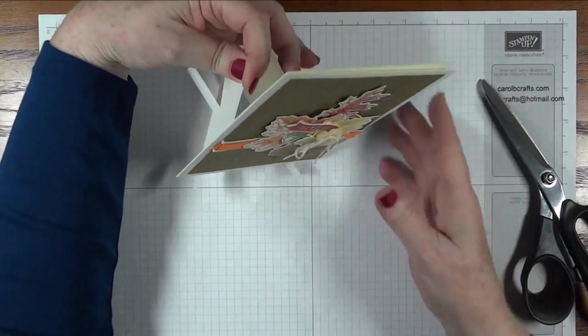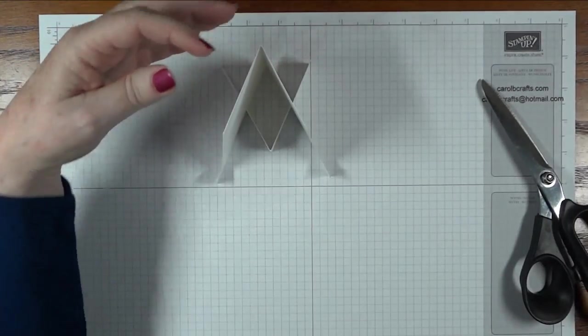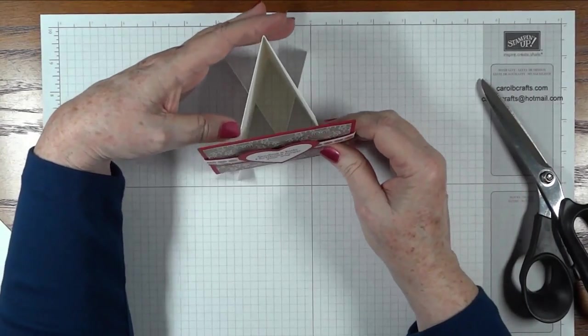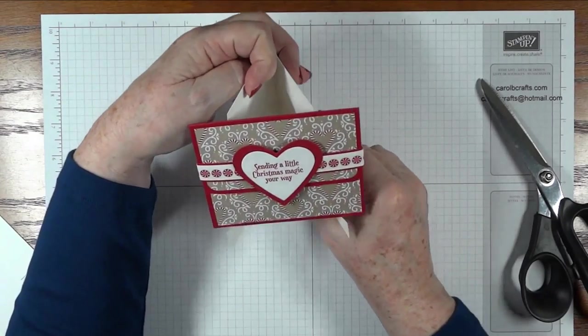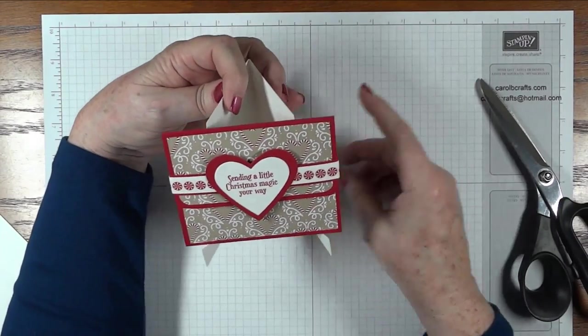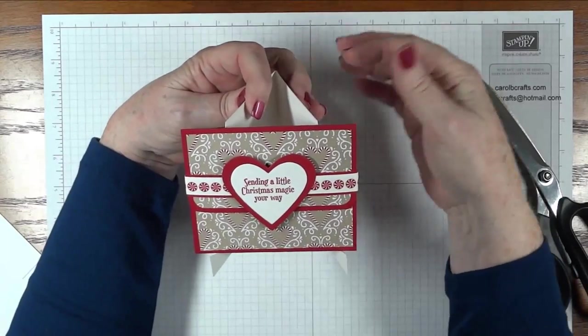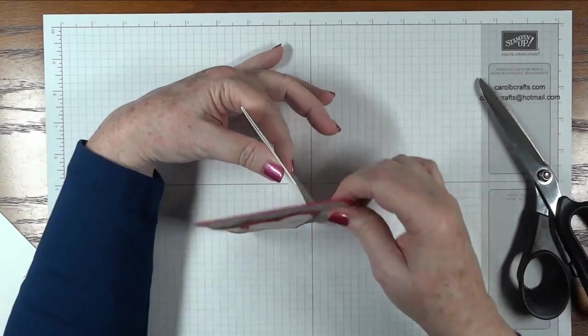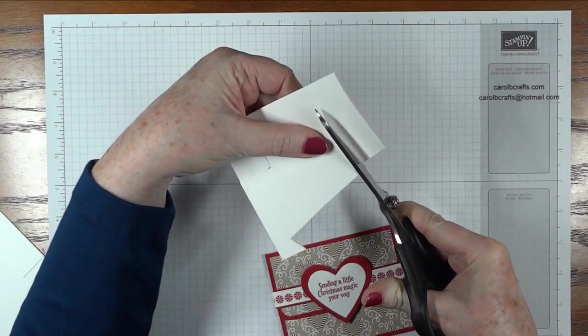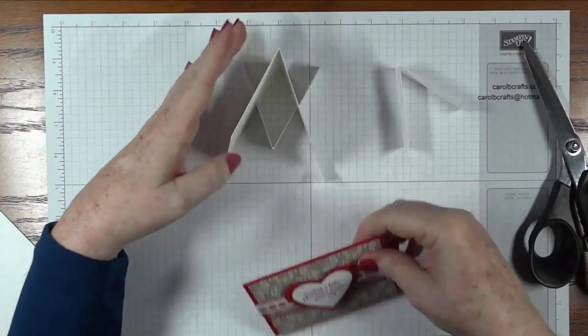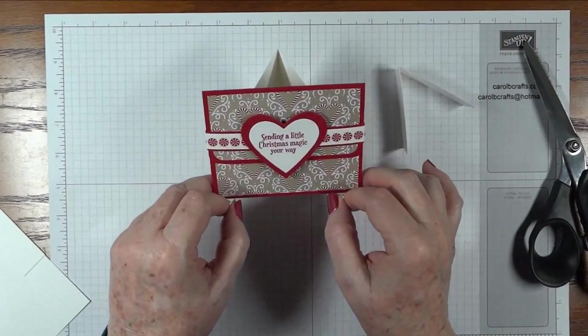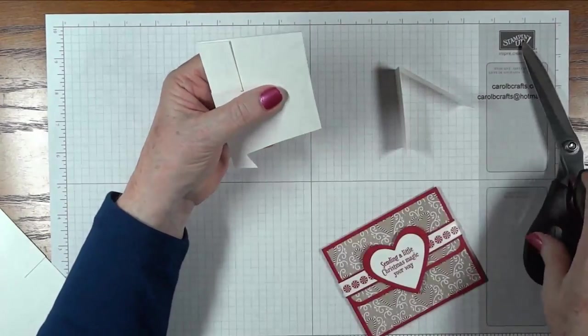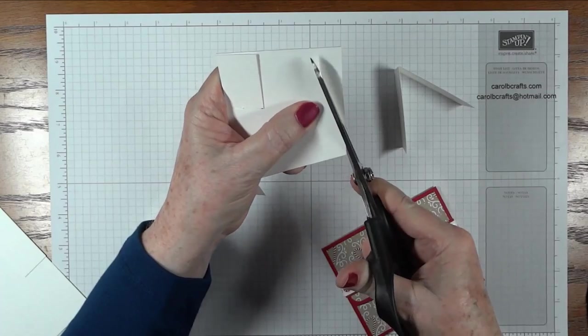But if you want a smaller card, let's say if you wanted to do this, this is actually a gift card holder but you could say it's a card, you can see that the back is kind of sticking up there. And if you don't want that, then what you can do is you can cut the back down a little bit so that your card, the back isn't showing as much. And if you really want to get rid of the back you can actually cut it at an angle like that.